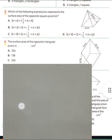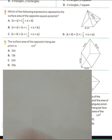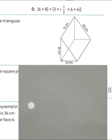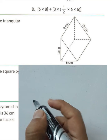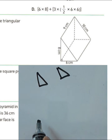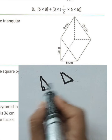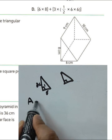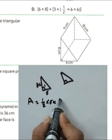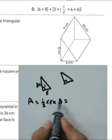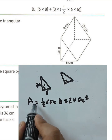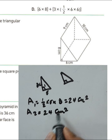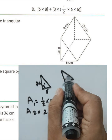Next, question number four: find the surface area of the triangular prism shown. First, we identify two congruent triangles. The base is six and the height is eight centimeters, so the area of one triangle is one-half times six times eight, which equals 24 square centimeters. Because the two triangles are congruent, the other triangle also has area 24 square centimeters.